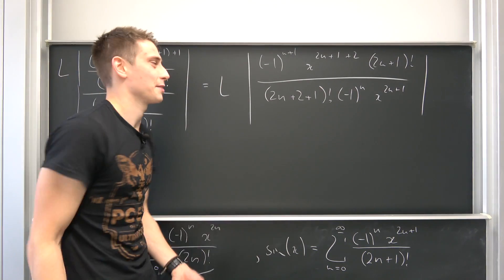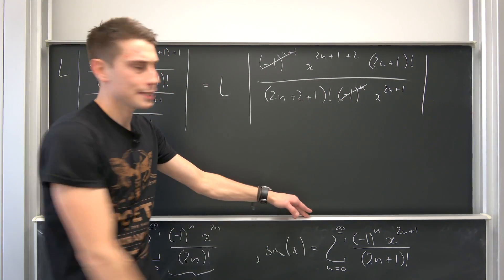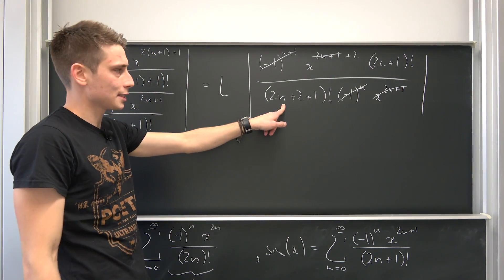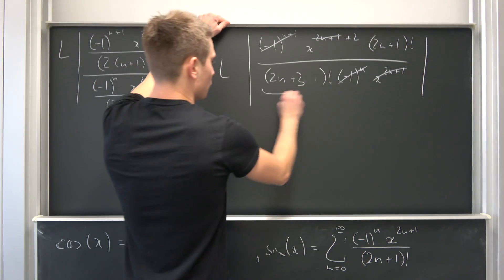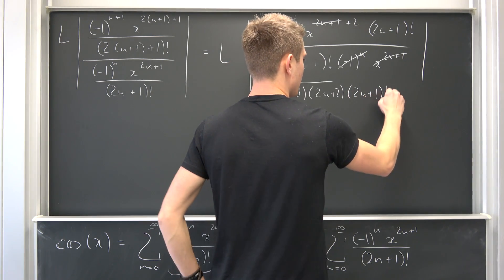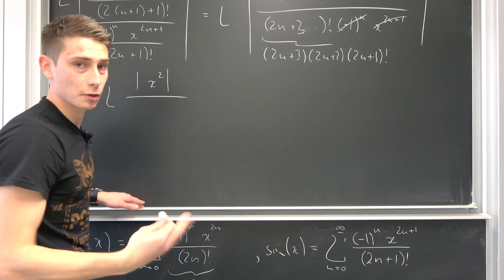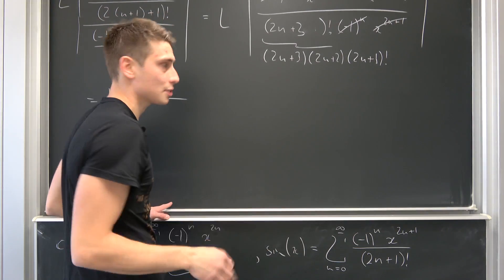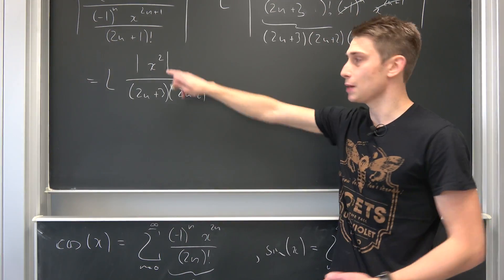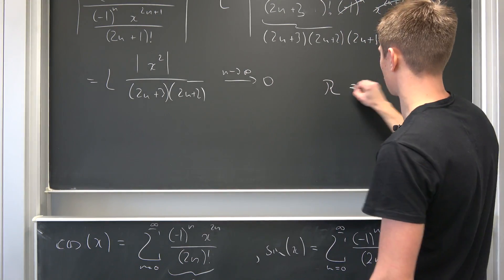Taking the absolute value of everything — it's quite a mess. Just like before, the negative one vanishes because of the absolute values. The x to the (2n+1) power cancels out, leaving x squared on top. This chunk in the denominator is just (2n+3) factorial, which we rewrite as (2n+3) times (2n+2) times (2n+1) factorial — and that (2n+1) factorial cancels. So we get the limit of x squared over (2n+3)(2n+2), which again goes to zero as n approaches infinity, meaning the radius of convergence is once again infinity.